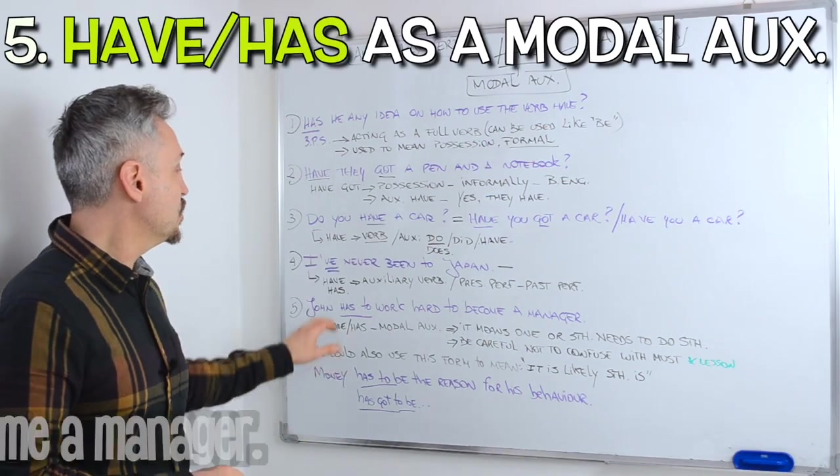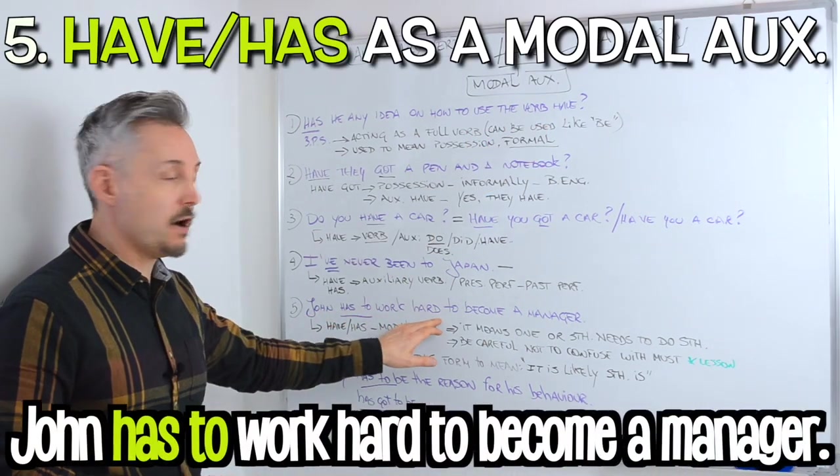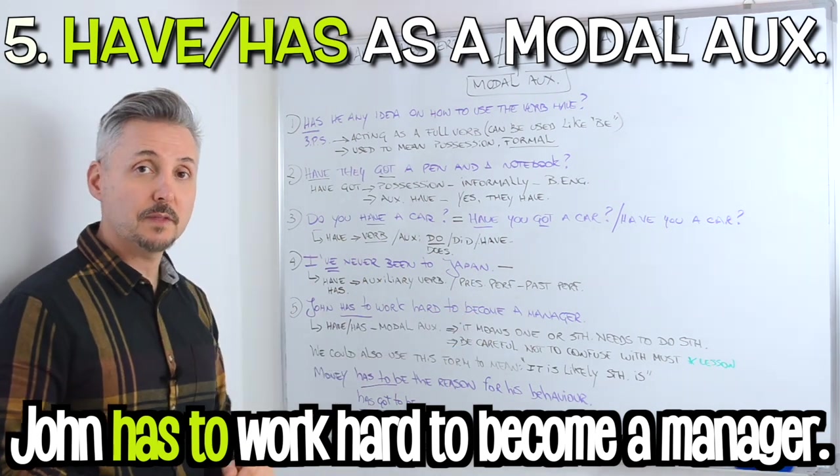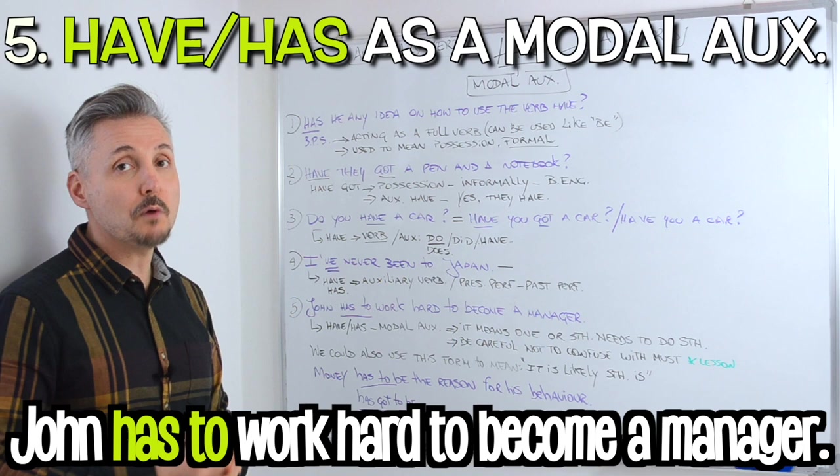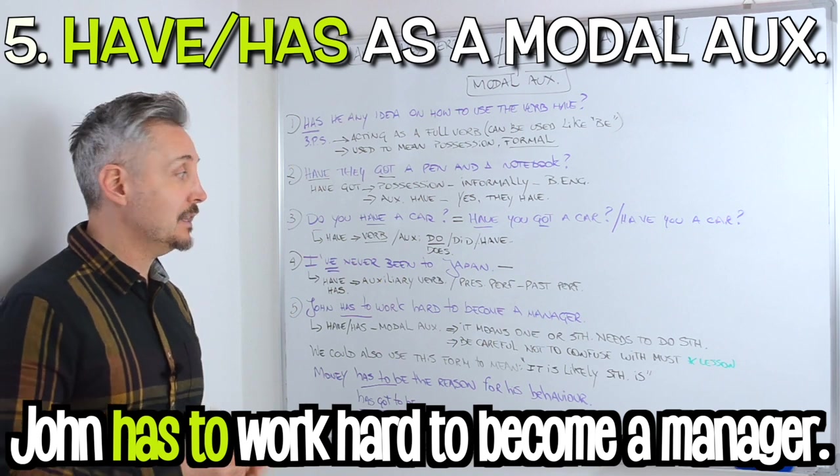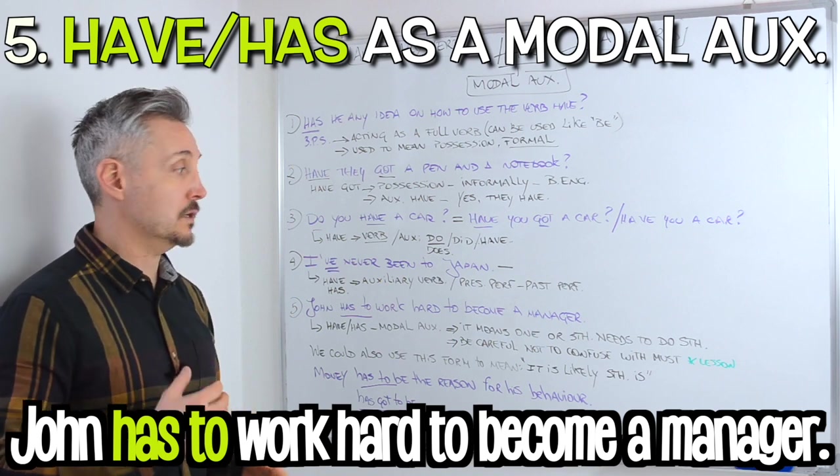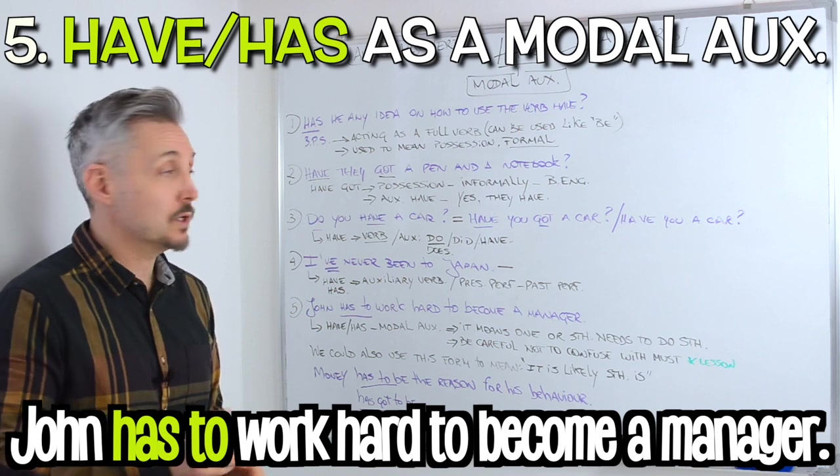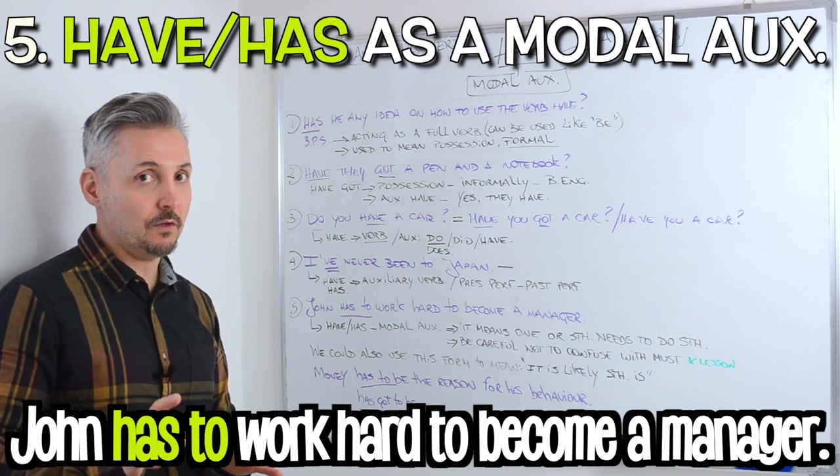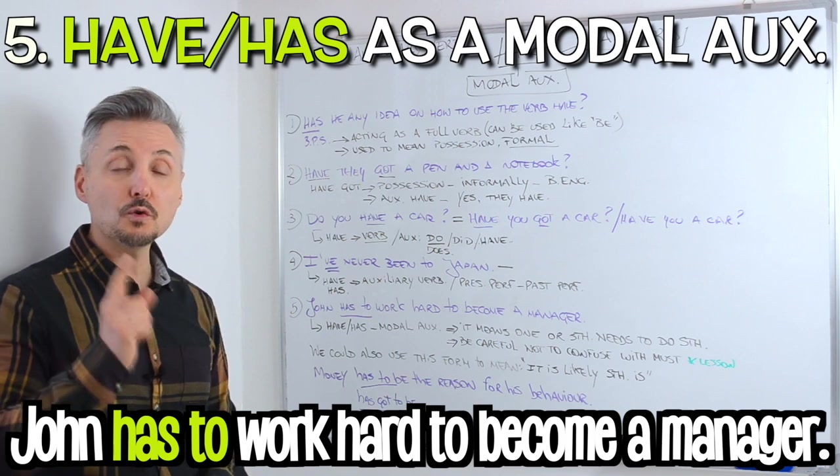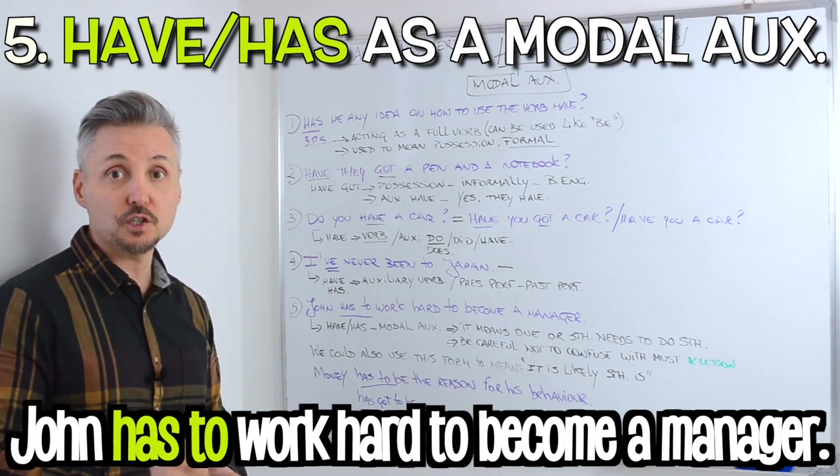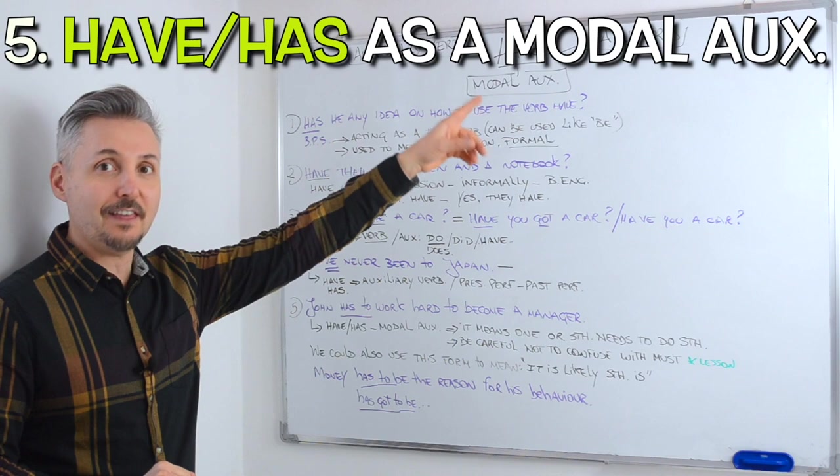My fifth example was: John has to work hard to become a manager. In this case, have or has to is a modal auxiliary, and it means one or something needs to do something. Be careful though, do not confuse it with must. If you wish to watch a lesson on have to and must, you may click there.